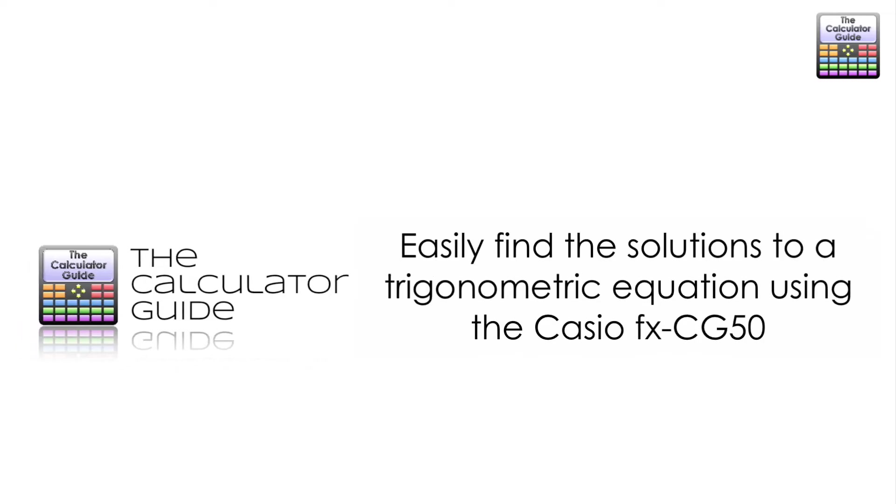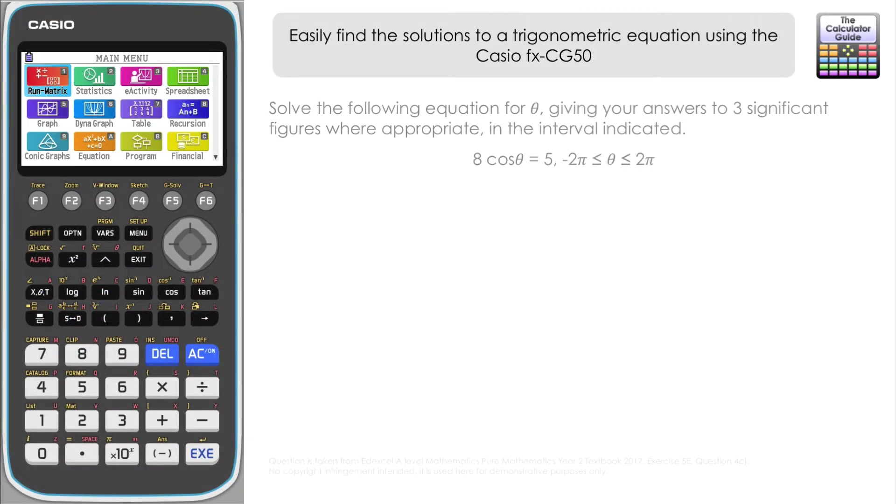Hello and welcome to the Calculator Guide video on how to easily find the solutions to a trigonometric equation using the Casio fx-CG50. The CG50 provides a really easy and straightforward way of being able to find all of the solutions to a trigonometric equation in a given interval.